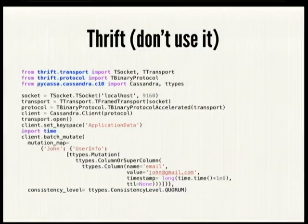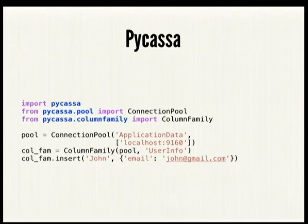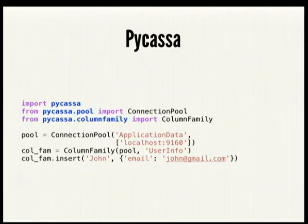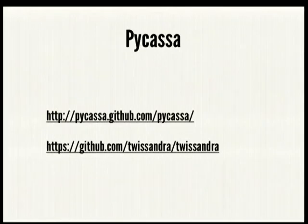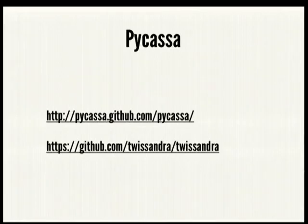This is why you don't want to use Thrift directly — the IDL-generated code has a whole bunch of extra objects and stuff, so you get a lot of generated code. You want to use PyCassa, which does the same thing — connecting and inserting a value — in about a third of the lines of code. PyCassa has very good documentation up on GitHub. There's also an example application called Twisandra, which is basically a Twitter clone using Django and PyCassa — good to go look at.